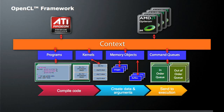So the first thing is we have program objects, which will take our source code. We'll actually build those programs once we've loaded the source code from disk or from a string. We're going to get a kernel object — our kernel object will have the actual code that's going to be run on the different devices, as well as the arguments to those kernels. Once we've compiled our code and created our kernel objects, now we need to create some memory objects — you might be creating images, buffers, or both.